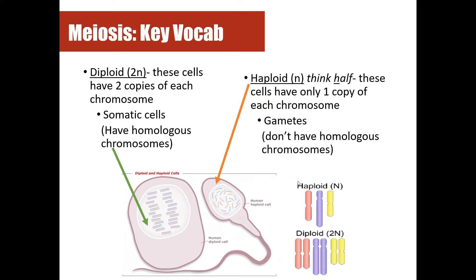Haploid is the term used to describe half the number of chromosomes — these cells only have one copy of each chromosome. We use the letter N to represent haploid cells. When you think haploid, think half — half the number of chromosomes. Sex cells or gametes are haploid, meaning they contain half the number of chromosomes. In humans that number is 23, which is half of 46. In rats that's 21, and in fruit flies that's four chromosomes in their gametes.